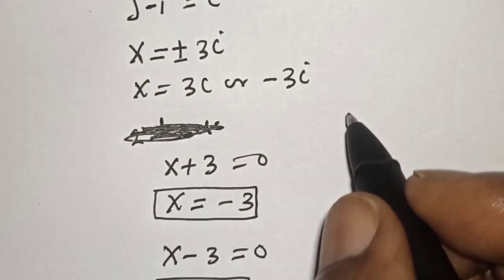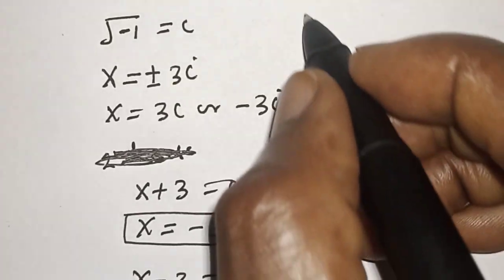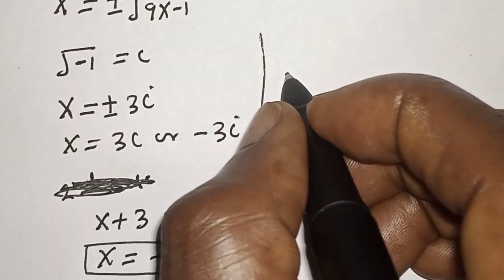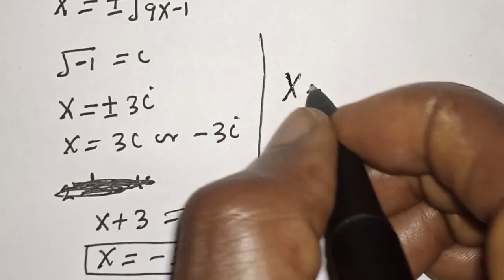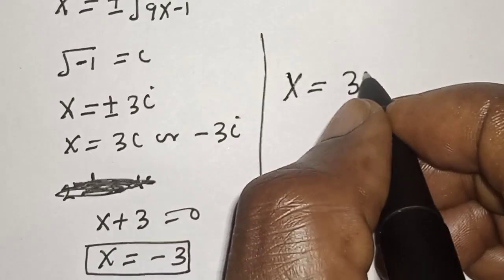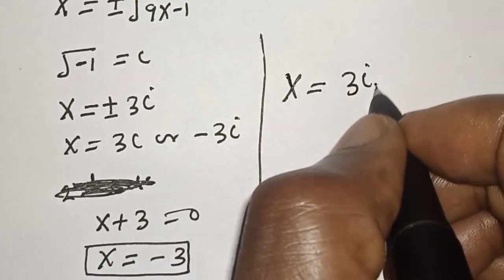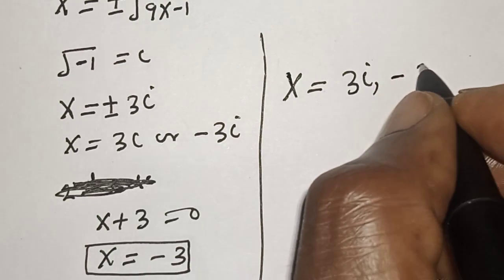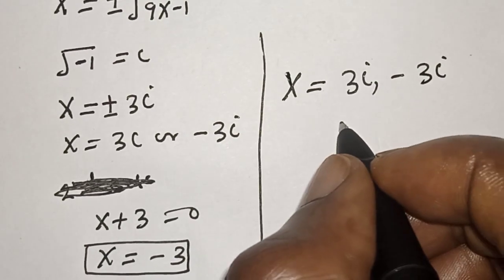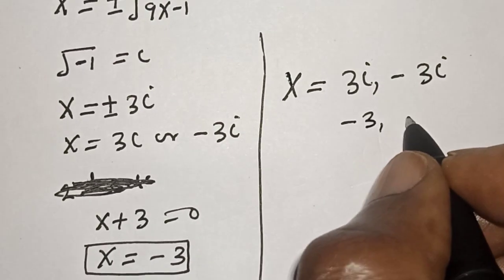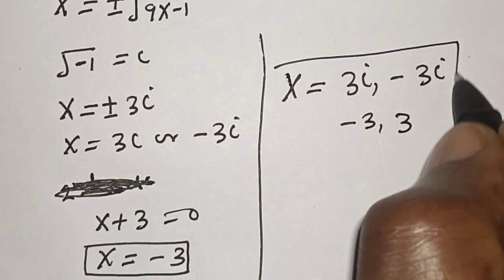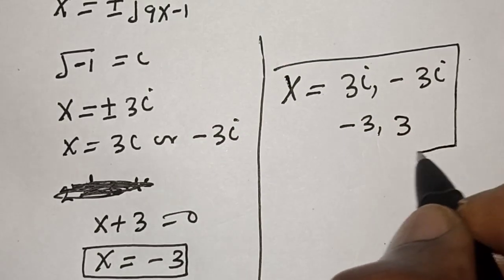The roots of this equation are x equals plus or minus 3i, x equals minus 3, and x equals 3. That is our final answer.